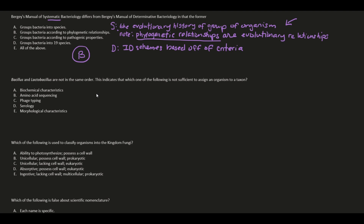Two examples of biochemical tests are selective media and differential media. Selective media has ingredients that suppress growth of competing organisms and encourage growth of desired ones. Differential media allows the desired organism to form a colony that is distinctive. So those are biochemical tests that can be used to know the characteristics of microbes.